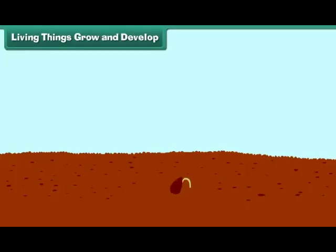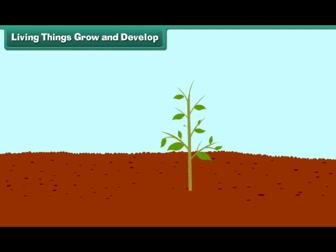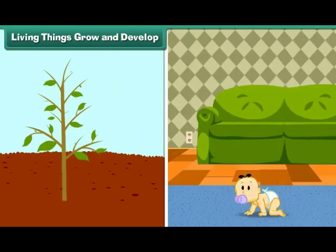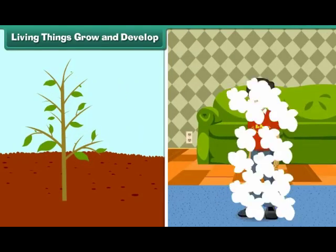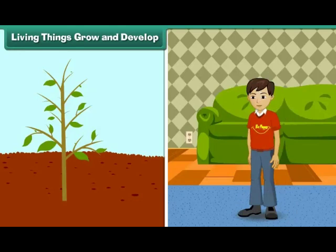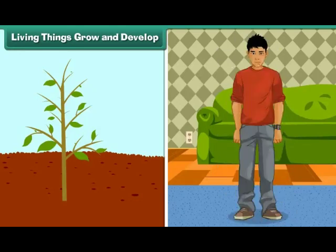Living things grow and develop. All organisms grow and develop. Growth results in an increase in size, weight, and synthesis of new protoplasm. In animals, growth is limited to a certain age, while plants grow throughout their entire life.